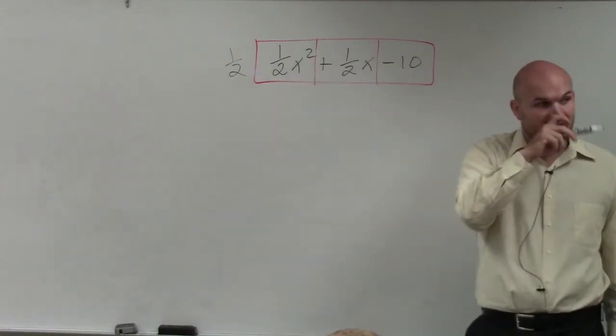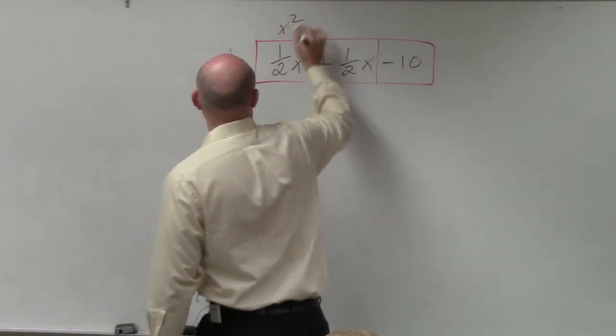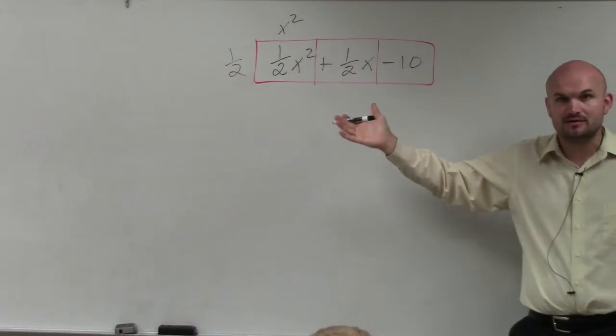So 1 half times what gives me 1 half x squared? Well, it's just going to be x squared, right? 1 half times x squared is 1 half x squared.